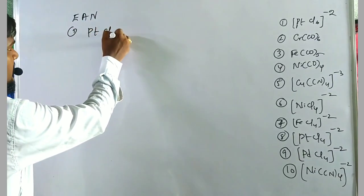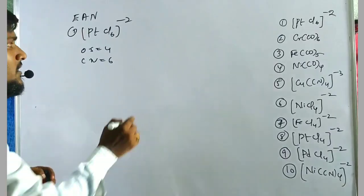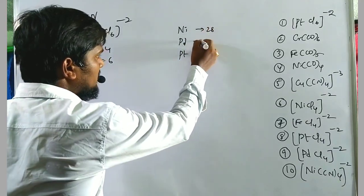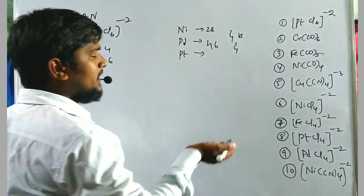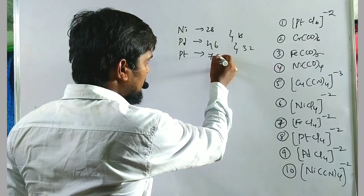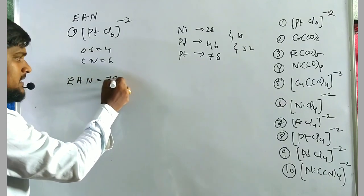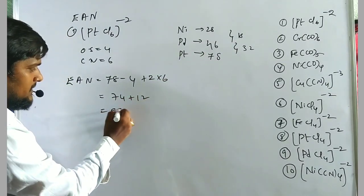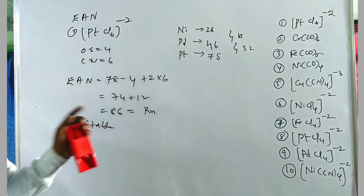Exercise example 1: [PtCl6]²⁻. Oxidation state = +4, coordination number = 6. Platinum's atomic number is found using triads: nickel (28), palladium (46, adding 18), and platinum (78, adding 32 for the lanthanide series). EAN = 78 − 4 + (2 × 6) = 74 + 12 = 86, which equals radon. This complex is stable.